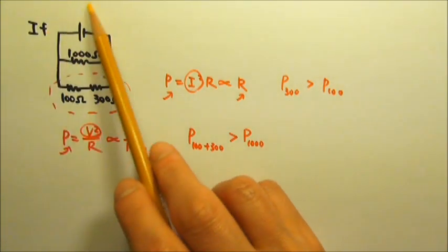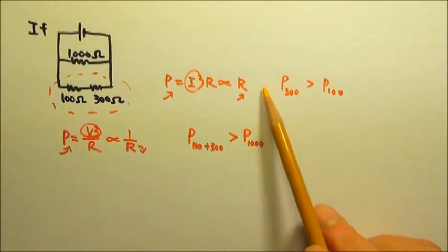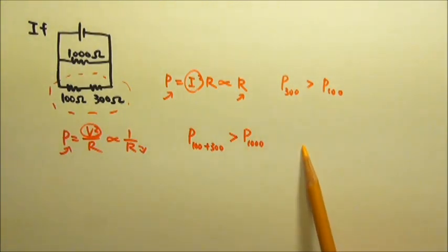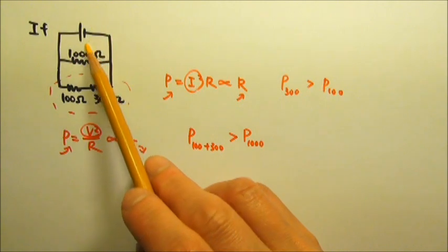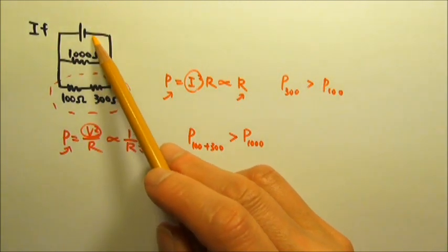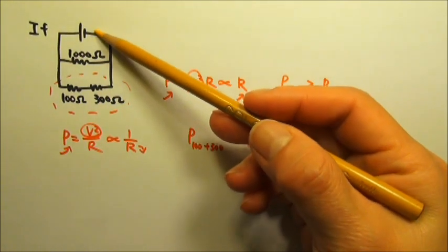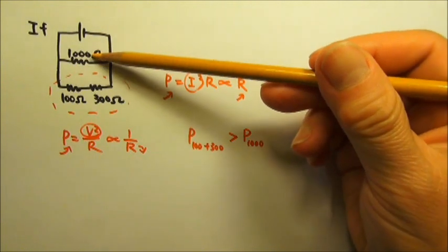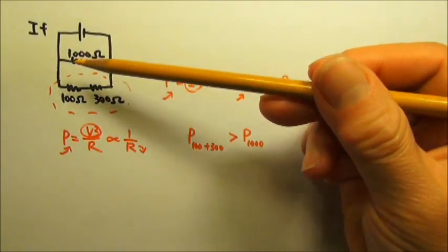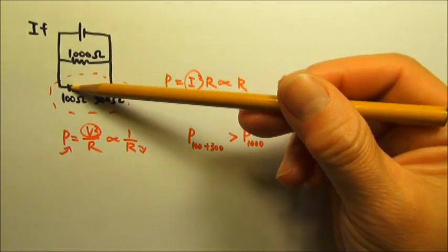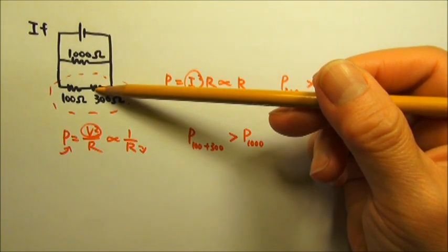So in a scenario like this, when we cannot use these two combined to determine the ranking, it can be a good idea for us to make up a voltage for the battery, say 1000 volts, and then do the calculations and figure out the power consumed by each resistor and then rank the numbers.